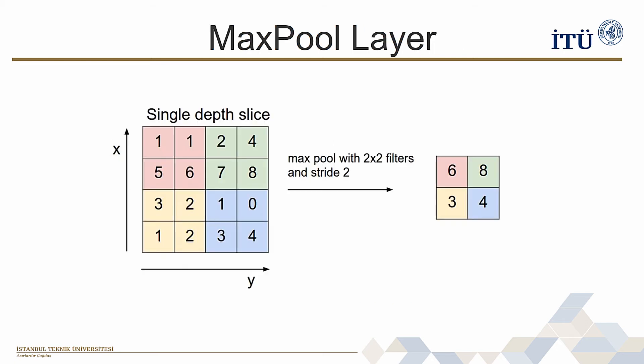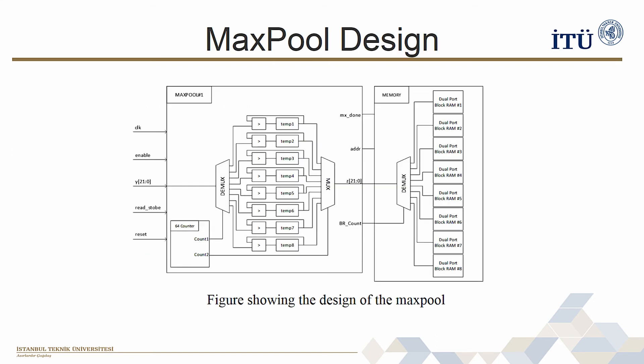The logic behind the MaxPool layer is reducing the data size and reducing the total number of parameters in the network. As the first convolution layer produces its output, the MaxPooling operation does not interrupt this pixel stream and scans for the maximum at every clock cycle.